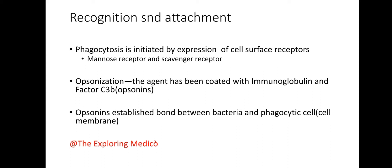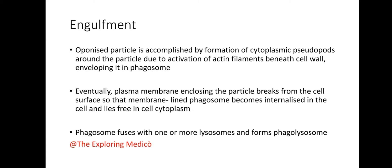Recognition and attachment: phagocytosis is initiated by expression of cell surface receptors like mannose receptors and scavenger receptors. Opsonization is the process by which the agent is coated with immunoglobulin and complement factor C3b. Opsonins establish a bond between the bacteria and the phagocytic cell.